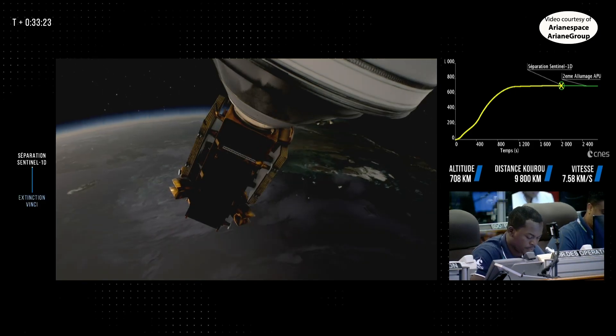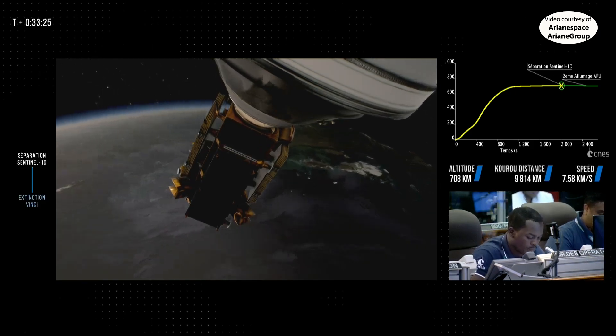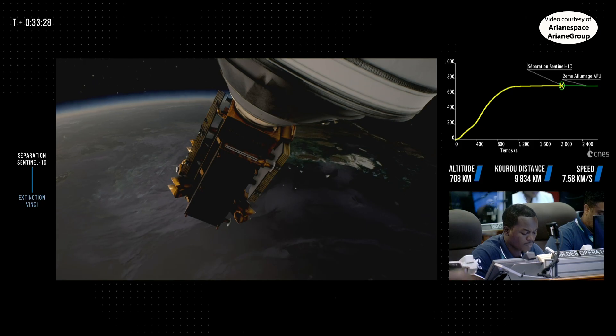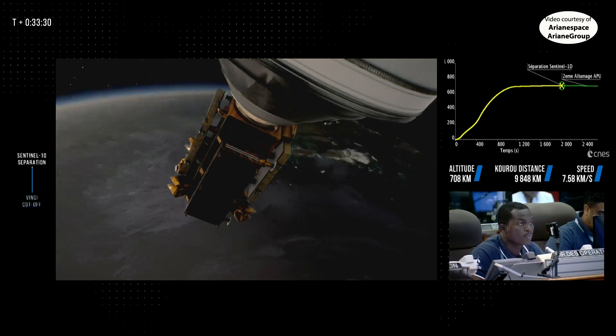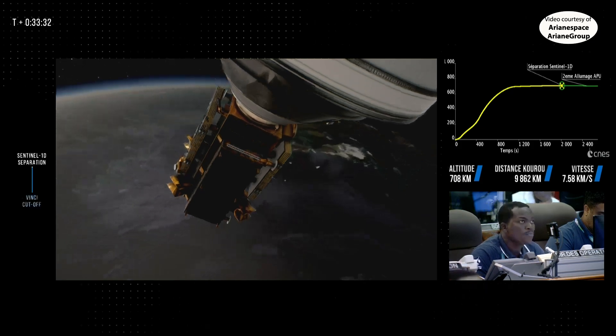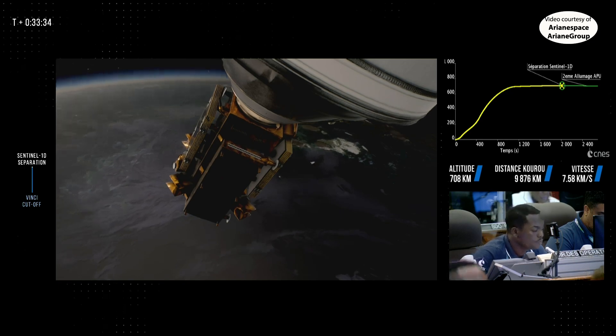And then once the orientation is reached, we'll stabilize the launcher. When it's very stable, we'll release the clamp band, which attaches the satellite to the launcher. And with six springs, it will separate.